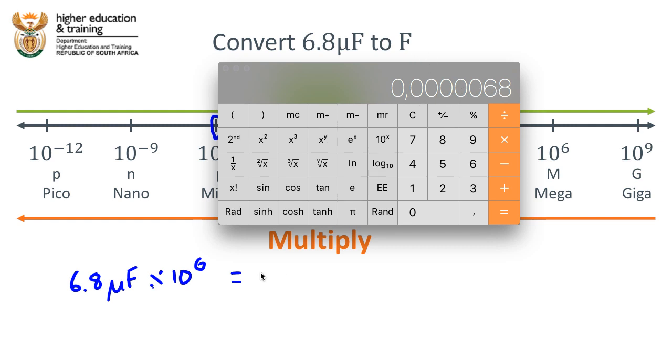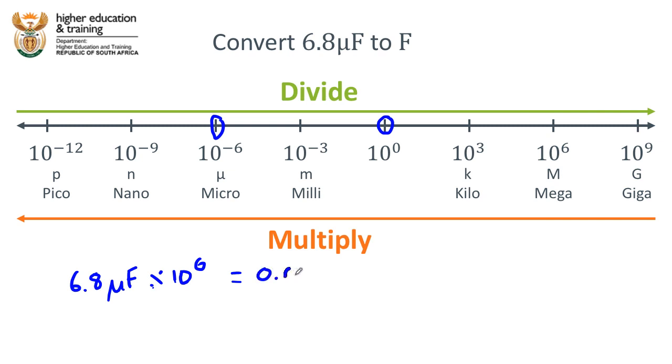There are five zeros over there, so that is 0.000068 farads. Now just because we can, let's make sure that we can do this without a calculator.